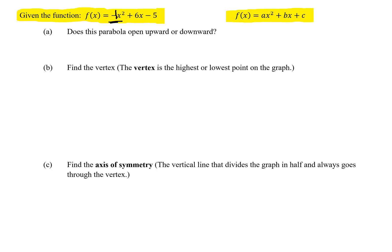So remember there's a negative 1 in front of that. So a is negative 1. b is the coefficient of the x term. So b is 6 and the constant term c equals negative 5.